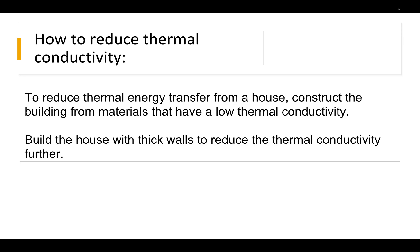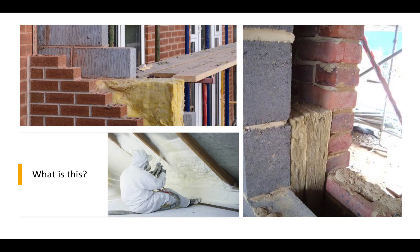Standard building in the UK uses breeze block, then you've got a 100mm gap, and then we fill that with insulation. Insulation has a low thermal conductivity, so it makes it difficult for the thermal energy to conduct from inside the house to the outside. That wall's nice and thick — you've got a skin of bricks, then the insulation in the middle, then a skin or layer of building blocks. Building blocks also have a very low thermal conductivity, again to keep the thermal energy inside the property.